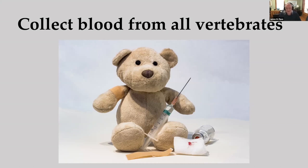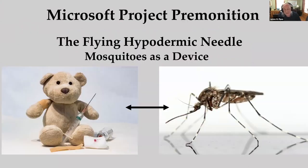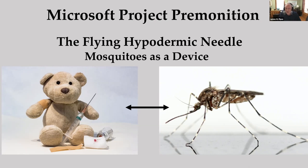The idea is to use mosquitoes as the collection device — Project Premonition, a collaboration with Microsoft for the last four years. This is the flying hypodermic needle hypothesis. There are over 3,000 known species of mosquitoes; the females collectively obtain blood from all vertebrates. Some are specialists — preferring humans or amphibians — while others are generalists. As a group, they do exactly what we want: they go out and collect blood. The strategy of Project Premonition is to capture mosquitoes at scale in a given ecosystem and then sequence individual mosquitoes to determine the mosquito species, the host blood meal species, and any viruses present.